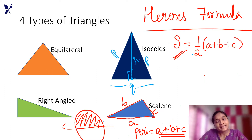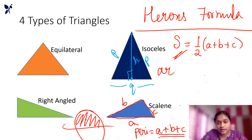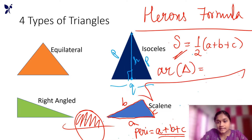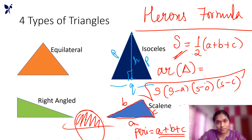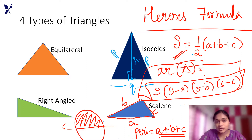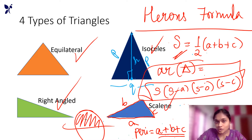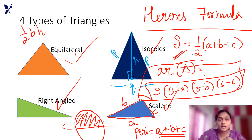This is the semi-perimeter and its formula. The area of a triangle using Heron's formula is not just for scalene triangles — it also works for right-angle and isosceles triangles. But the main use is for the scalene triangle, where you have no height, so you use Heron's formula instead of half into base into height.